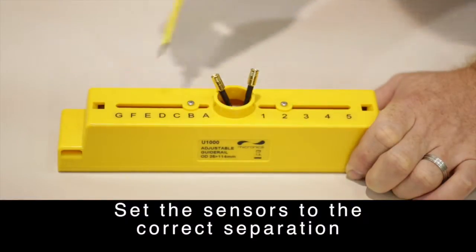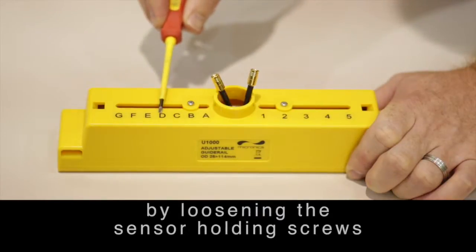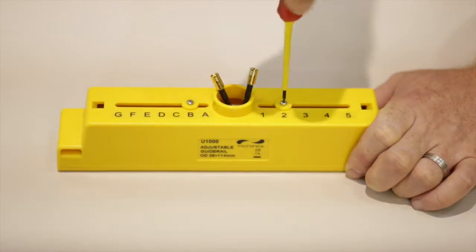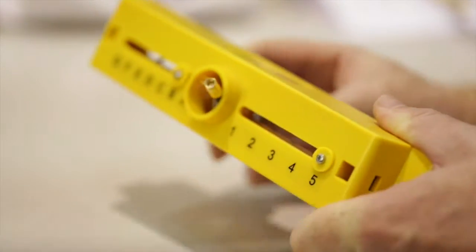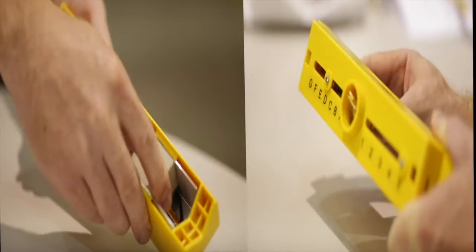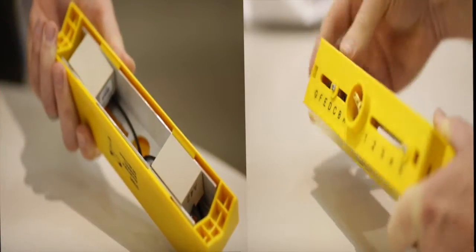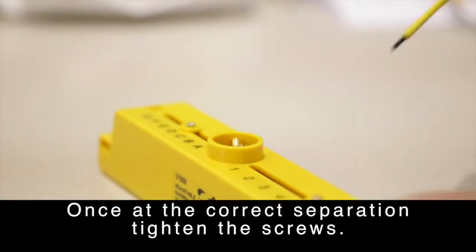Set the sensors to the correct separation by loosening the sensor holding screws, so that the sensor can slide in the slot. Once at the correct separation, tighten the screws.